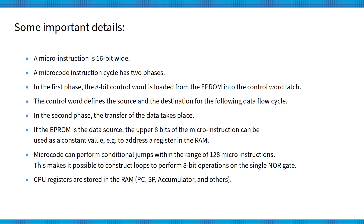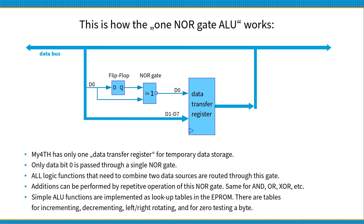CPU registers are stored in the RAM — for example the PC, SP, accumulator, and other registers. This is how the 1-NOR gate arithmetic logic unit works. MyForth has only one data transfer register for temporary data storage. Only data-bit 0 is passed through the single NOR gate. All logic functions that need to combine two data sources are routed through this gate. Additions can be performed by repetitive operation of this NOR gate — same for AND, OR, XOR, etc.